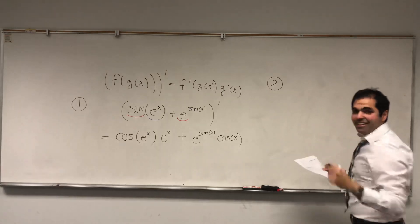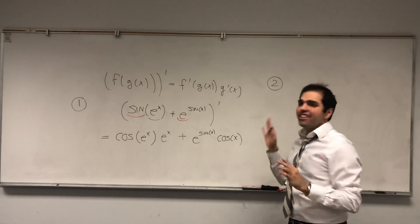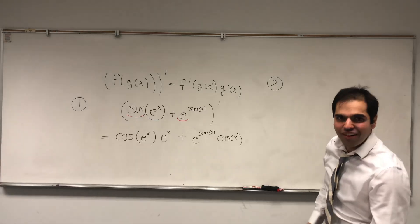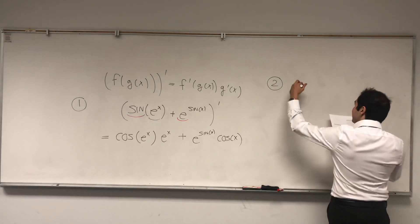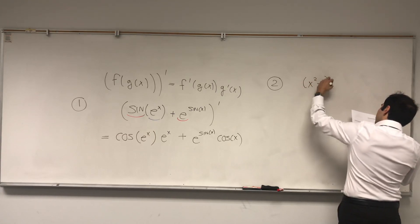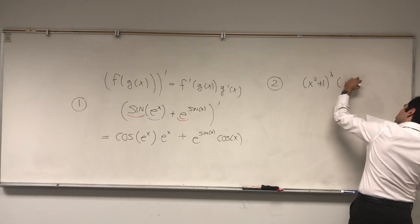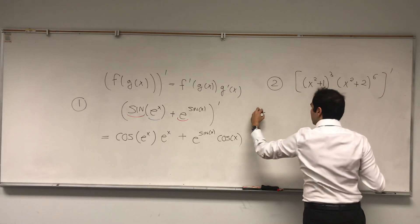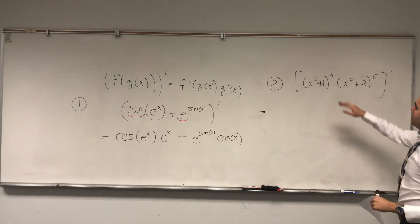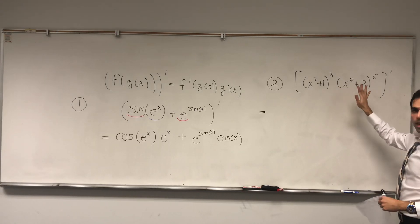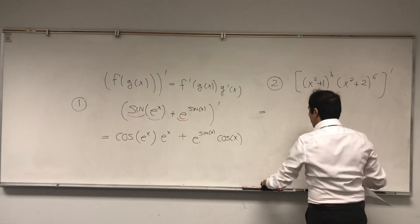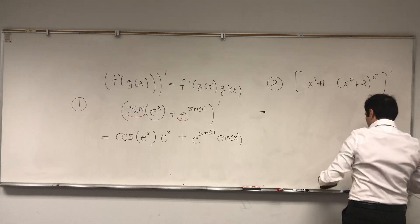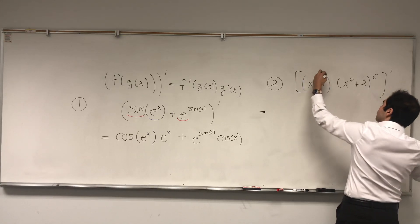The next one is kind of a reminder that even though you're probably addicted to the chain rule right now, you should not forget your other differentiation laws. So let's do the following: the derivative of x squared plus 1, cubed, times x squared plus 2 to the sixth. It's the product of two functions, so let's use the product rule. And so what you have to do is first differentiate this function, for which we need to use the chain rule, because this is x squared plus 1, cubed.